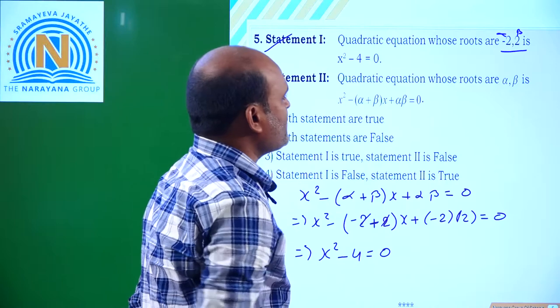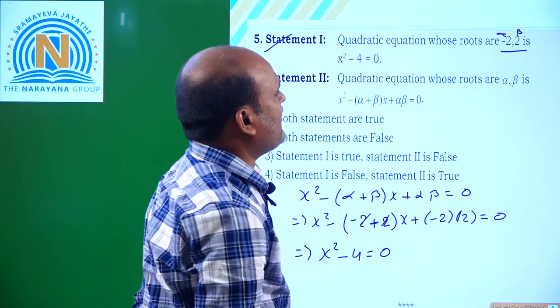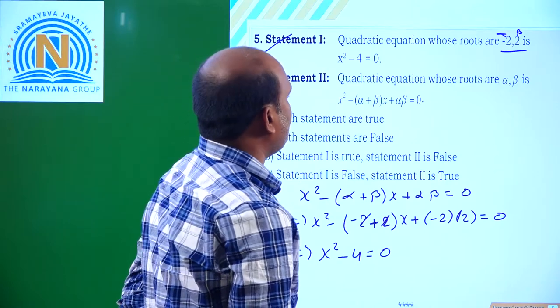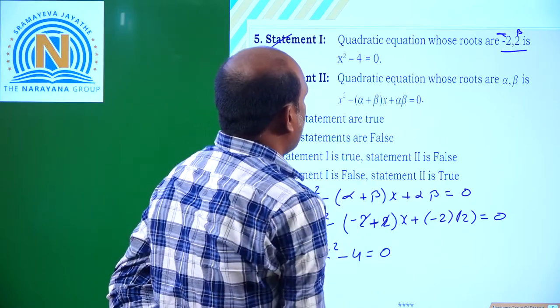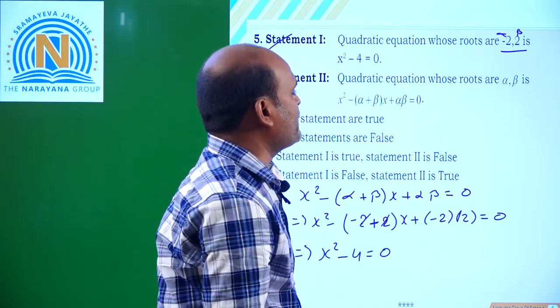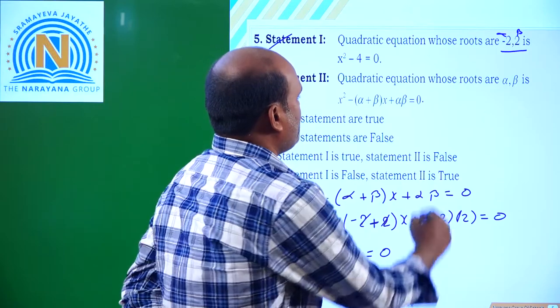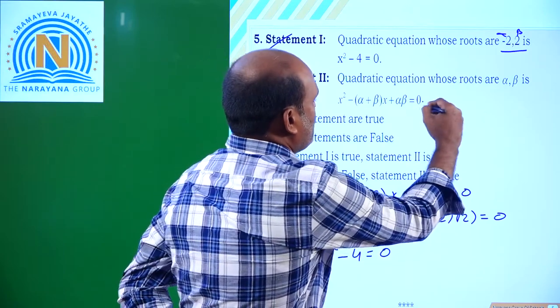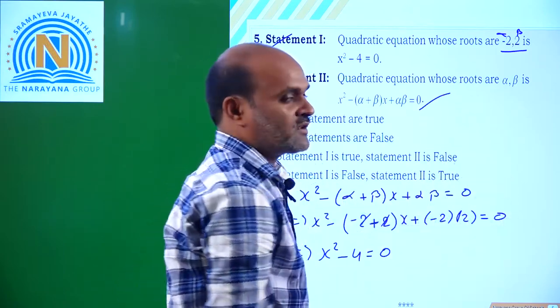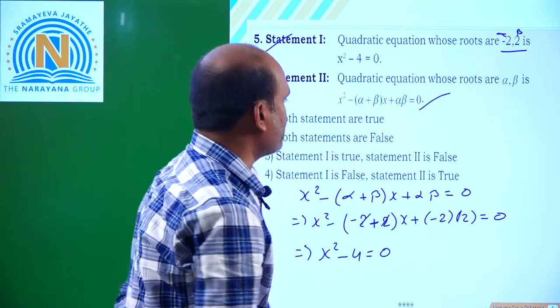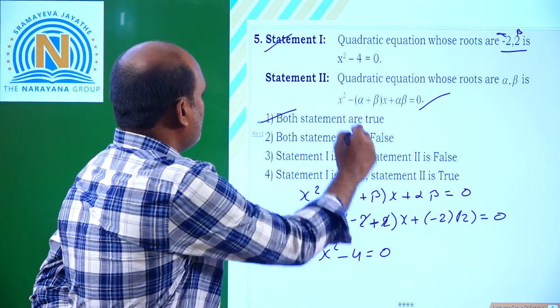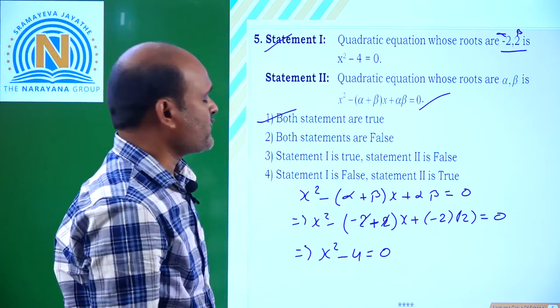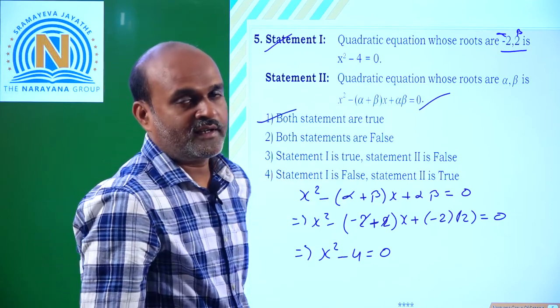The general quadratic equation whose roots are alpha and beta is x² - (alpha + beta)x + alpha·beta = 0. This is also a true statement. So both statements are correct — option 1 is the correct answer.